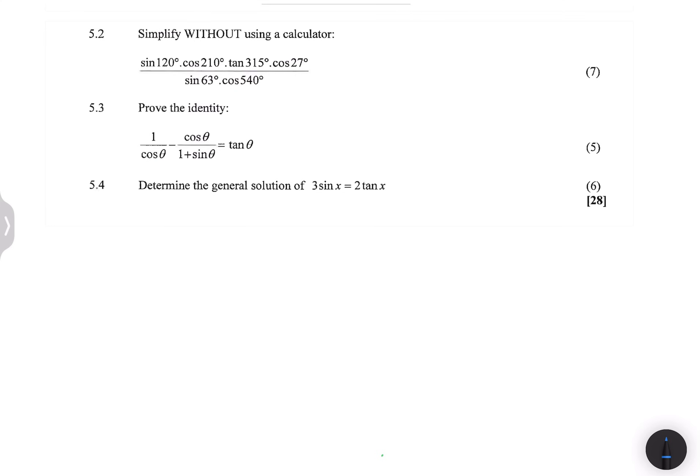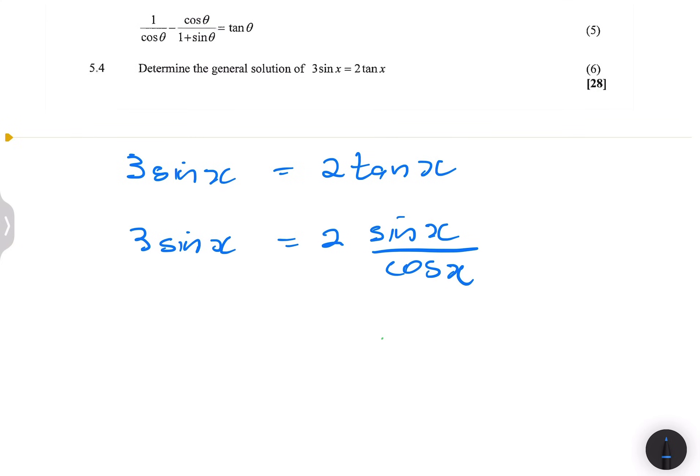Let's look at the general solution. So we are given the three sine of X, which is equal to 2tan(X). So what we always do is we try to convert into sine and cos. So essentially, at the end of the day, we apply the very same rules that we did when proving identities. So here we've got three sine of X. There's nothing we can change there. But we've got a 2tan(X), which in this case can be converted to sine of X divided by cos of X.